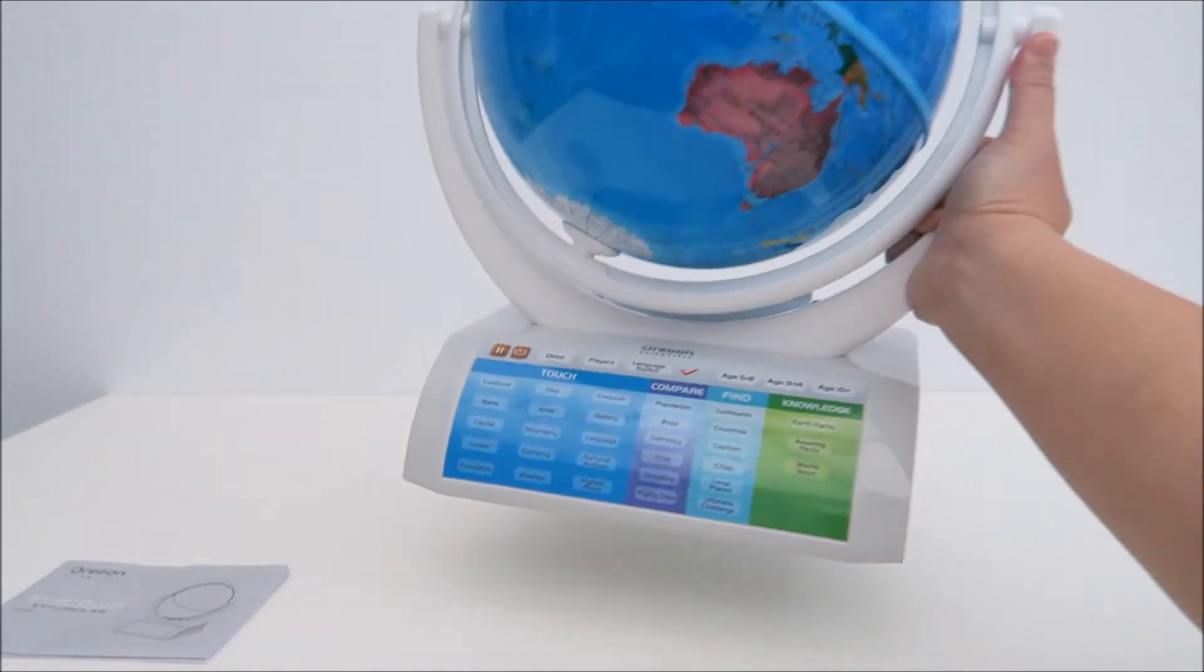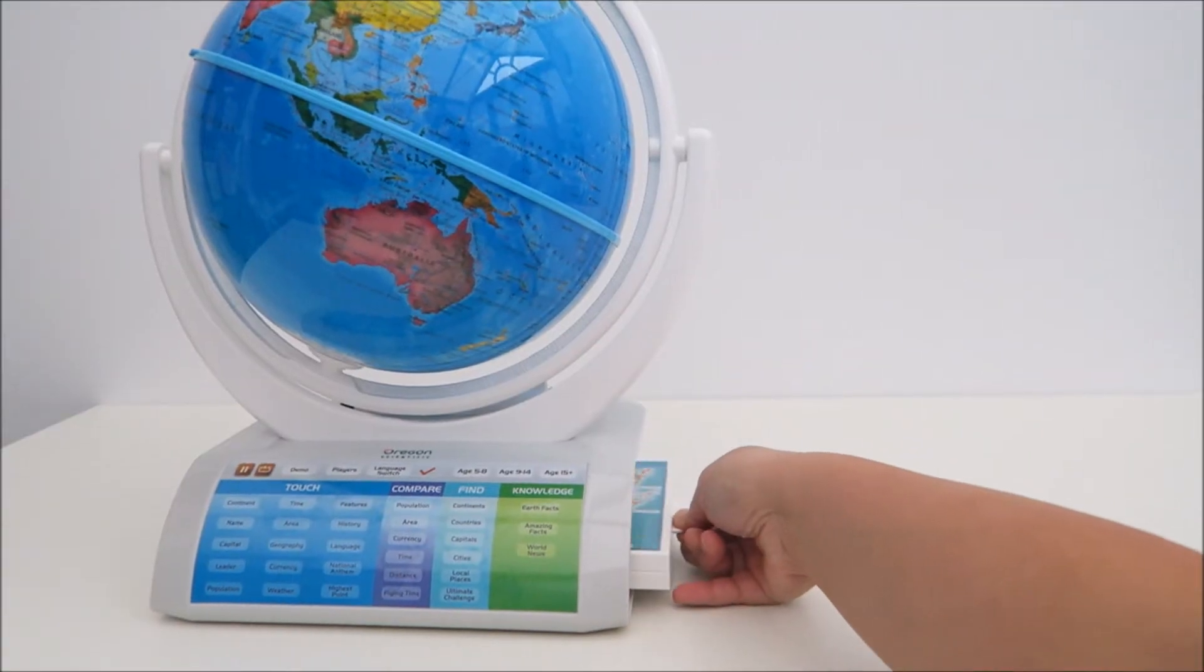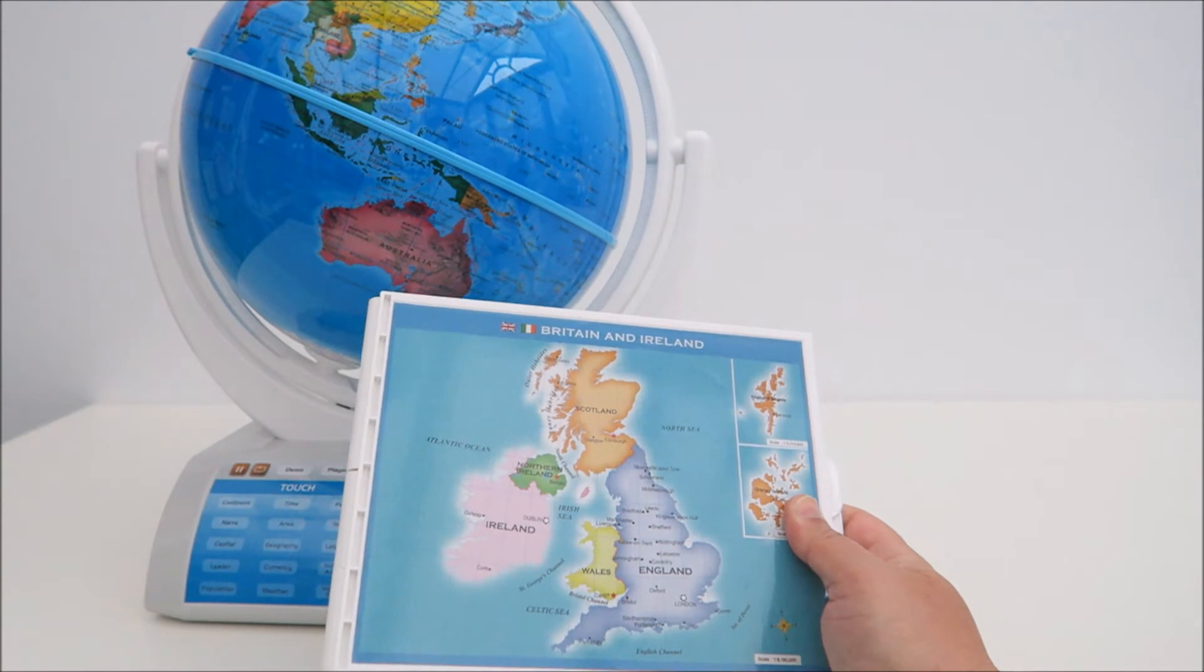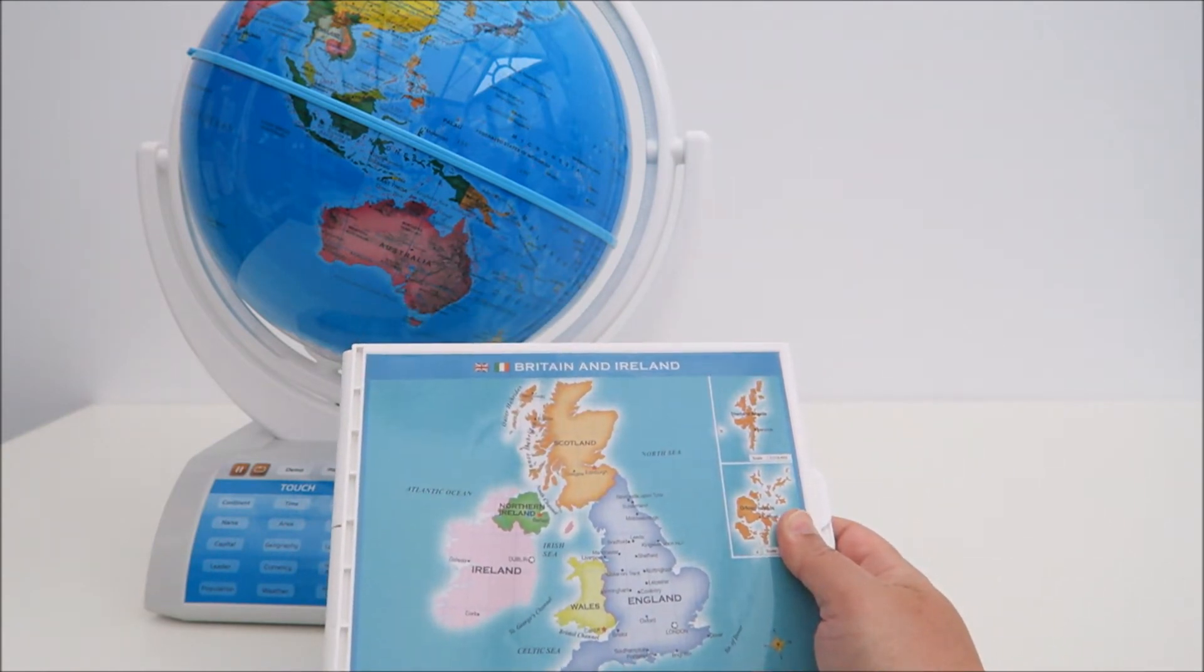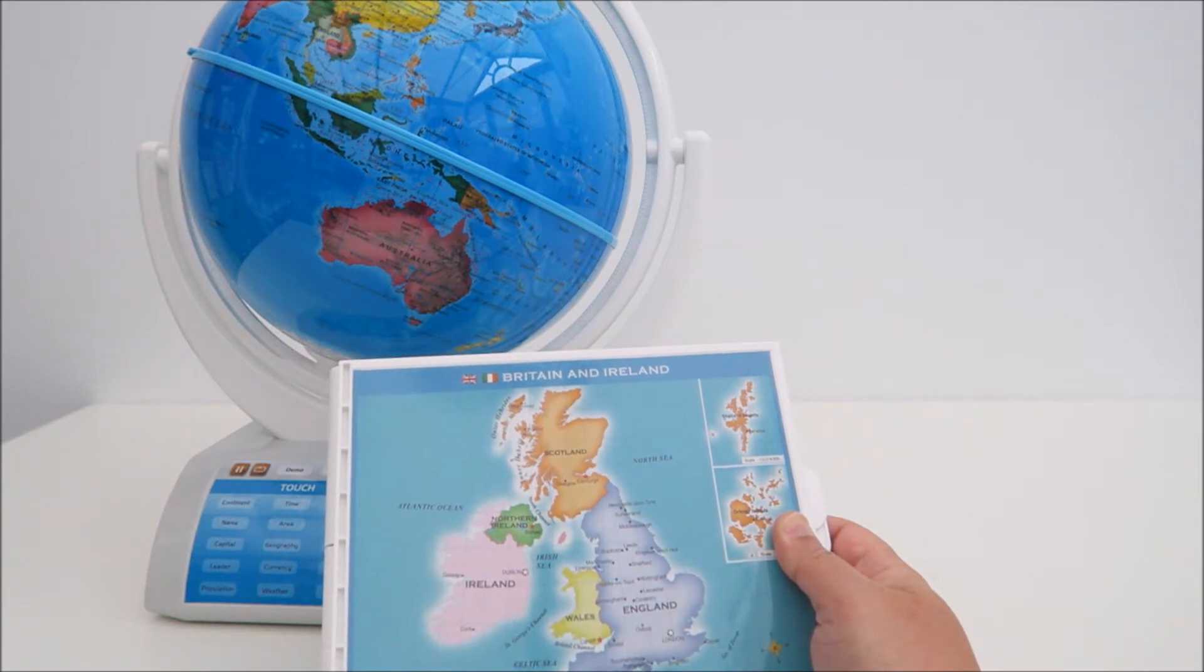What I love next about this is that it come with this drawer. This sliding drawer comes with a Britain and Ireland map here. It's also interactive so you can use your pen on this and then it will tell you about the country itself.